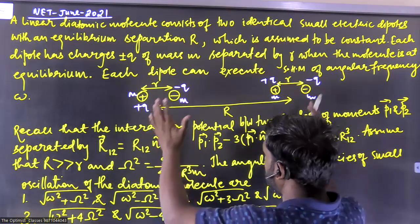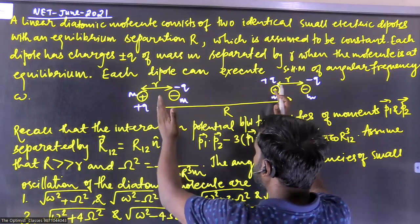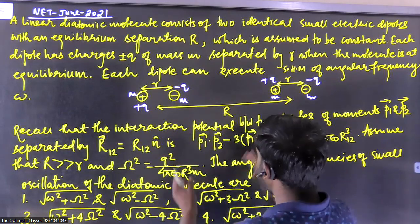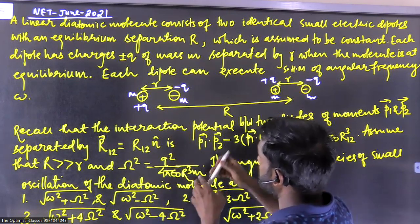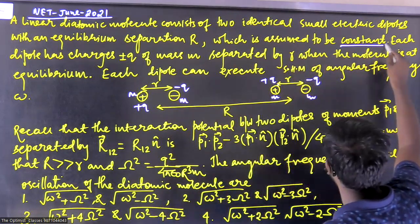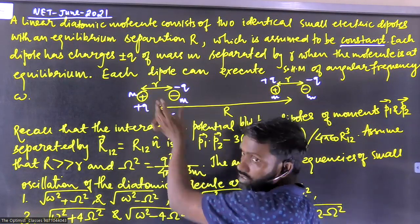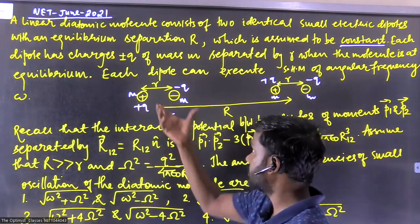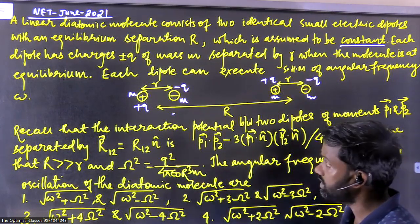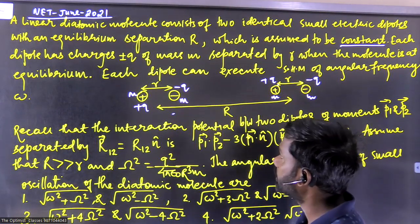When everything is at equilibrium, this separation is capital R and this separation is small r. This capital R is constant as the question states. But if the molecule vibrates, this small r will change — however, capital R is not going to change.